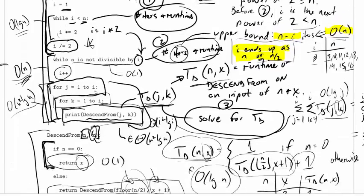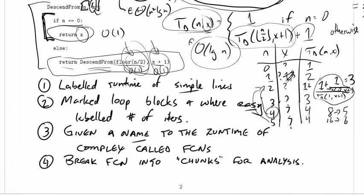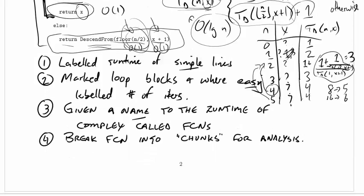Now I just want to go back down and think about the things that we did one more time. We labeled the runtime of simple lines, we marked loop blocks, and where it was easy, we labeled the number of iterations.